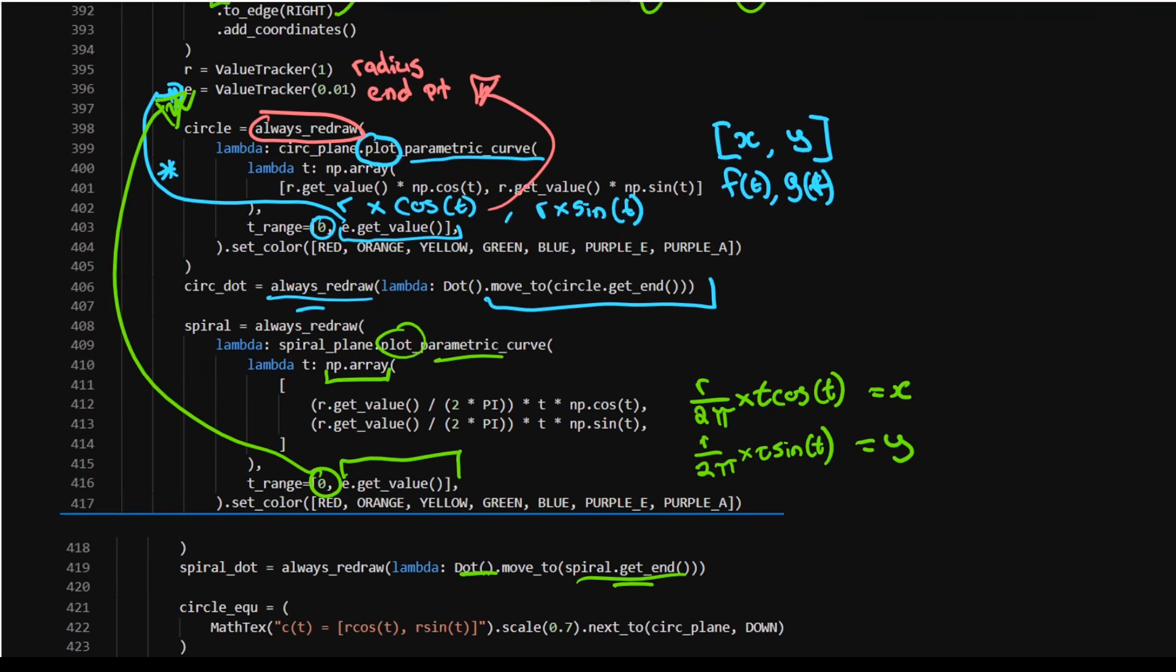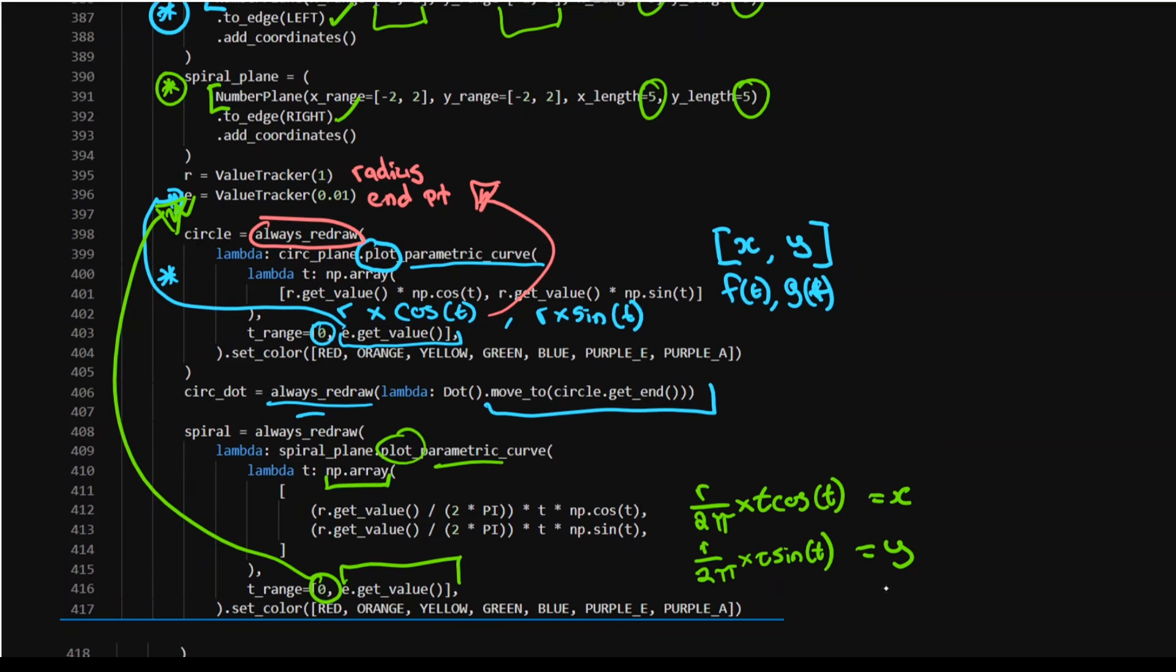Notice that I've skipped over this little detail here, but I'm calling the circle onto the circle plane and I'm calling the spiral onto the spiral plane. Let's not forget that little detail there.